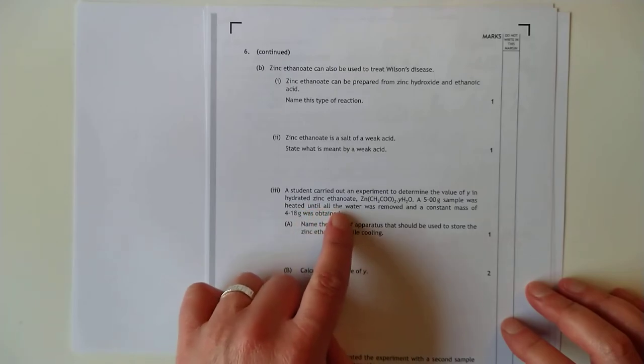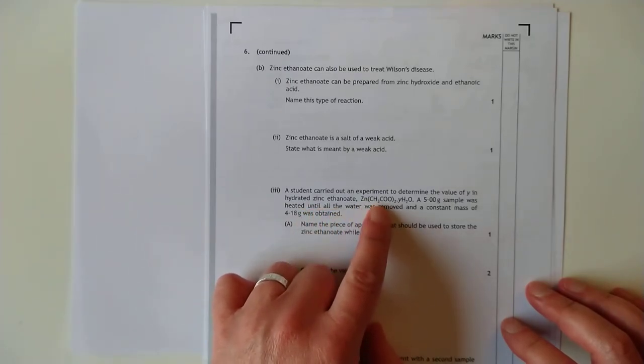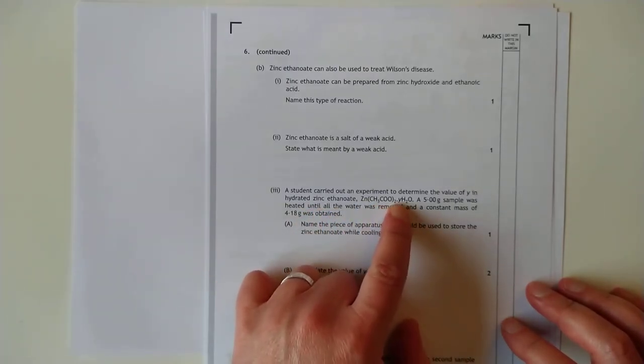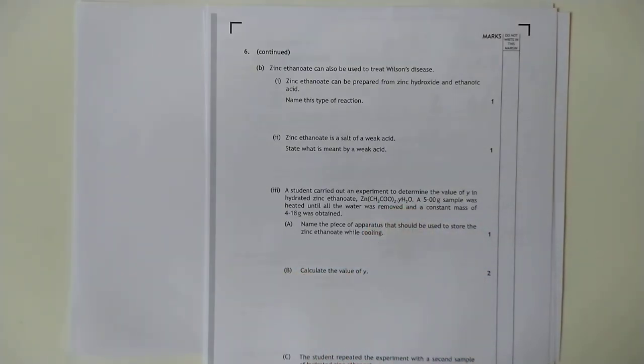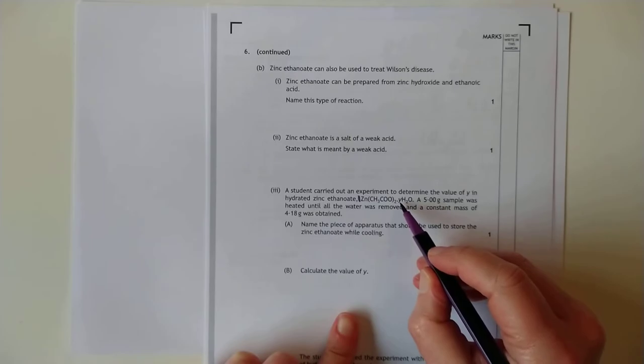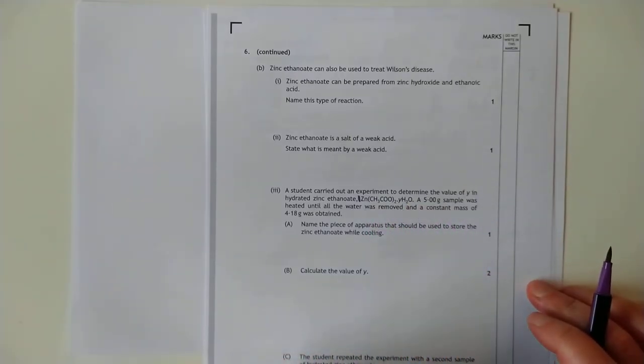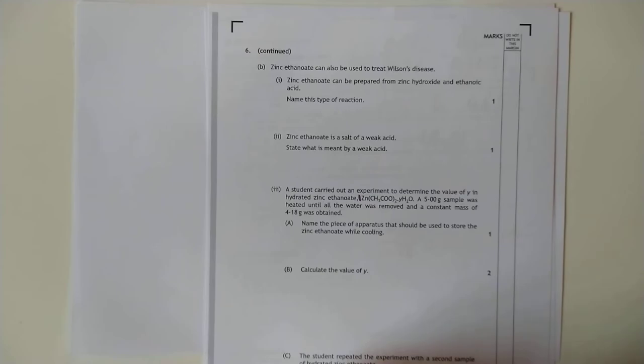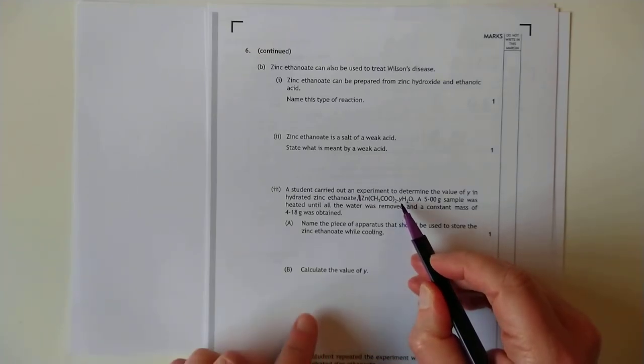Hydrated zinc ethanoate. So you get zinc ethanoate ions with a dot and then a YH2O. So that means that a certain number, for every one zinc ethanoate, there are a certain number of moles of water trapped in the solid crystalline lattice. This is often done to establish this number here.